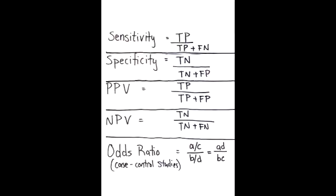In what types of study is odds ratio used? Odds ratio is used in case controlled studies. What is the equation of odds ratio? The equation of odds ratio is A over C over B over D.